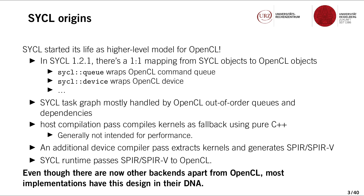Similarly, the SYCL task graph that SYCL uses to organize the execution of its kernels and other operations can mostly be offloaded to OpenCL's handling of out-of-order queues and OpenCL dependencies. As far as compilation is concerned, there would be a host compilation pass which would compile kernels as regular C++ as fallback — though that was generally not intended for performance — and then there's an additional device compiler pass with a specific SYCL compiler to extract kernels and generate some intermediate representation like SPIR or SPIR-V. When a kernel is executed, this intermediate representation is then passed into the OpenCL runtime for execution.